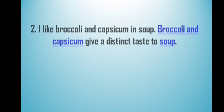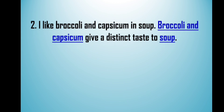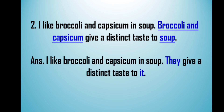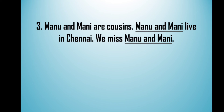The next sentence is: 'I like broccoli and capsicum in soup. Broccoli and capsicum give a distinct taste to soup.' The underlined words are 'broccoli and capsicum' and 'soup.' For broccoli and capsicum, which are plural, we use 'they.' For soup, we use 'it' because it is the object of the sentence. The answer is: 'I like broccoli and capsicum in soup. They give a distinct taste to it.'